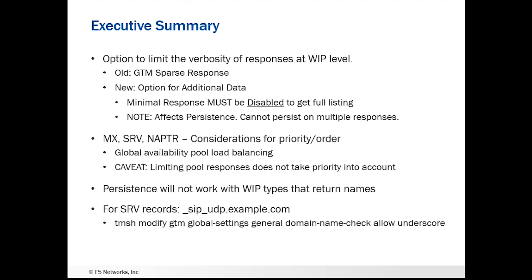In previous versions of GTM, GTM always gave back sparse responses, meaning it did not try to populate any of the additional information fields. We're going to keep that as the default response for GTM. But there is now an option you can specify on the wide IP itself to say that you want additional data returned. That field is called minimal response. If you want a full listing, you need to disable minimal response — it's enabled by default. So you need to disable it to allow GTM to populate full responses and provide that additional data.